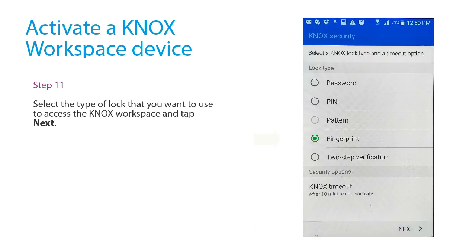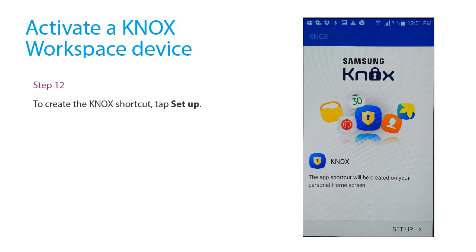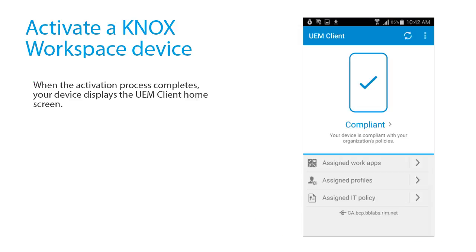Select the type of lock that you want to use to access the Knox Workspace and tap Next. To create the Knox Shortcut, tap Set Up. When the activation process completes, your device displays the UEM client home screen.